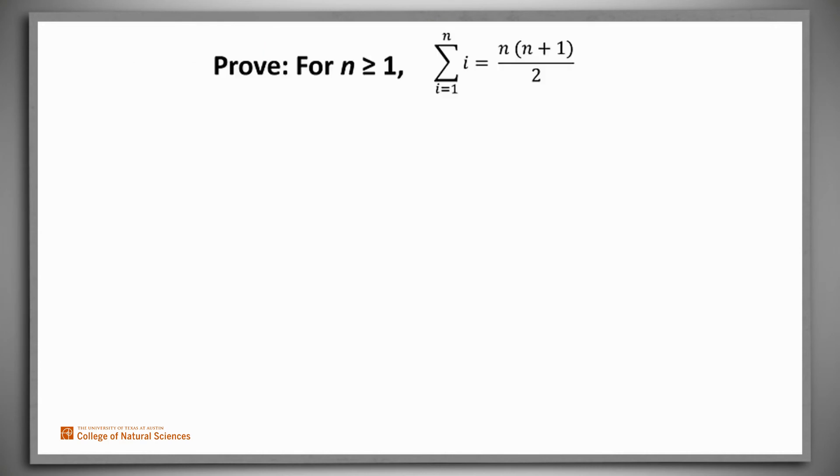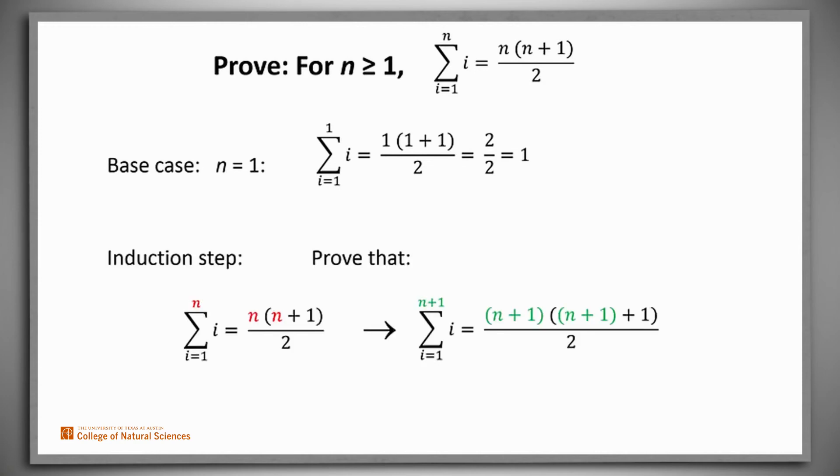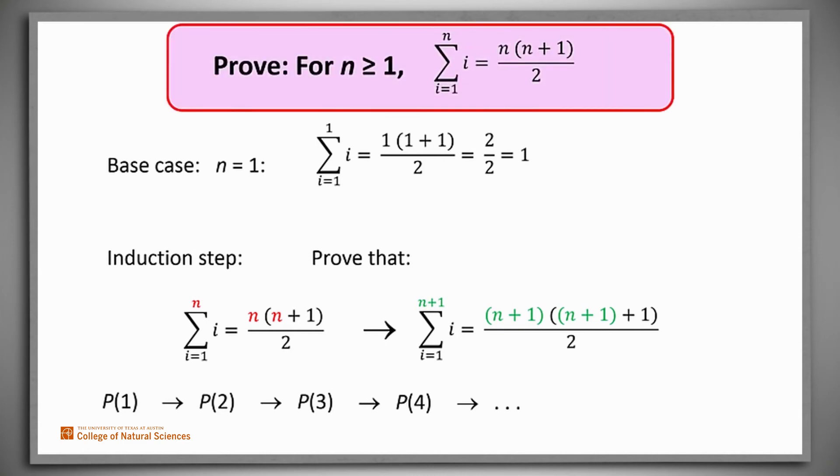Let's review our complete proof. We've proved the base case. Our claim is true for 1. And we've proved the induction step. So we have that our claim P is true of 1. The induction step tells us that it's therefore true of 2, and it's also true of 3, and it's true of 4 and so forth. The principle of mathematical induction has allowed us to conclude that for any n greater than or equal to 1, the sum of the first n positive integers is n times n plus 1 over 2.